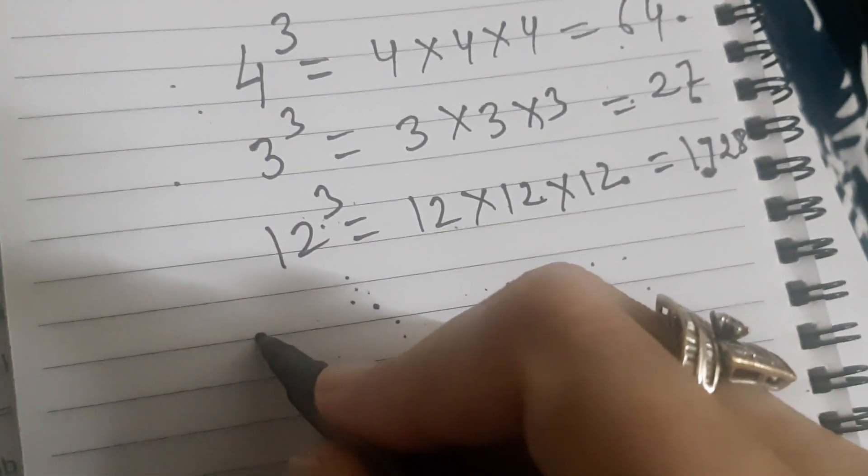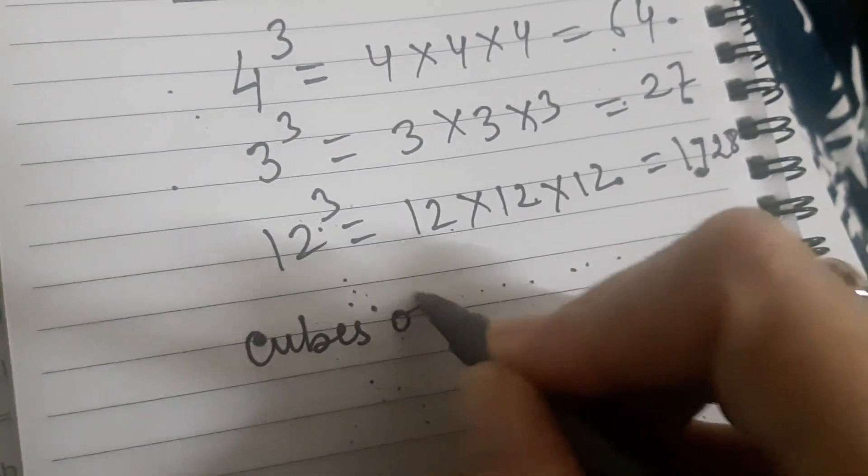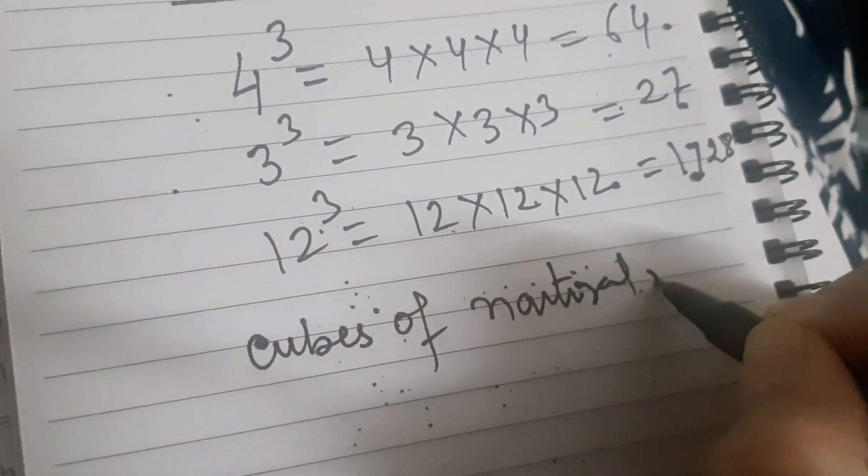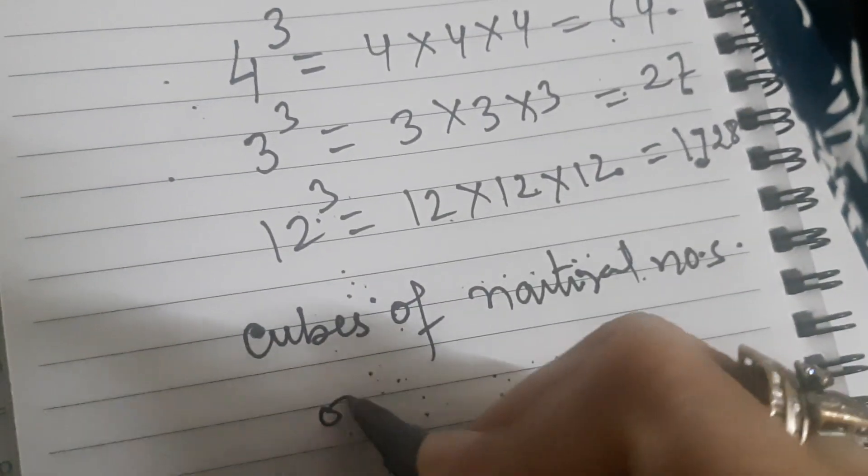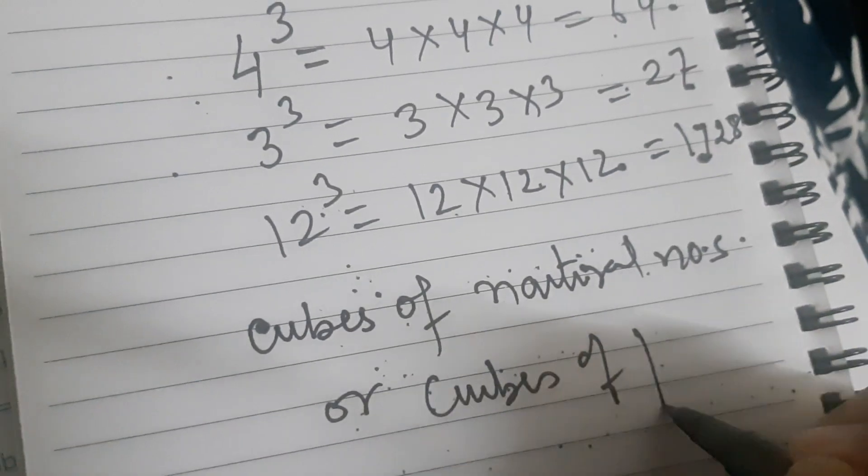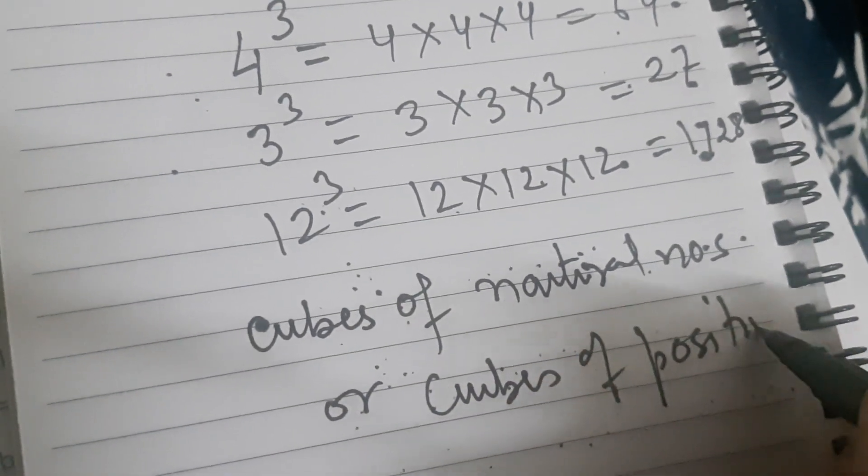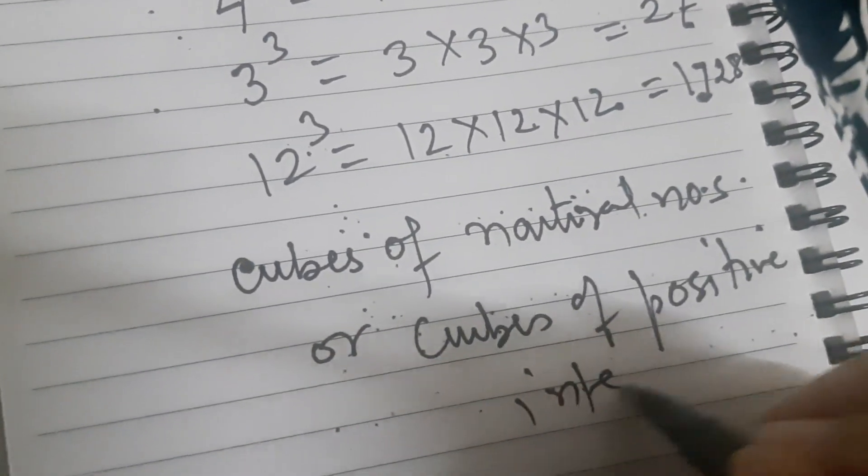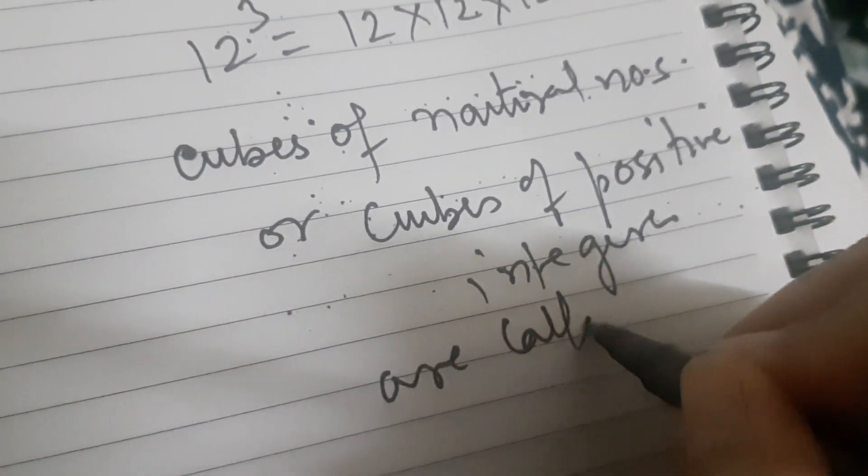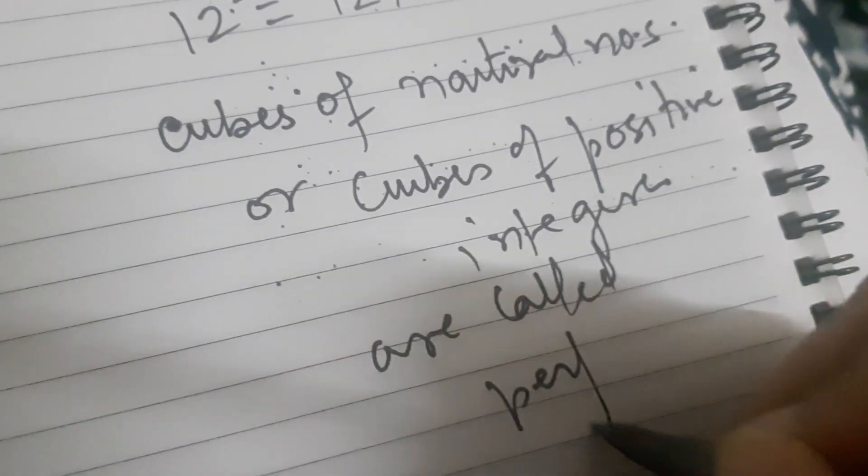So how do we define perfect cubes? Cubes of natural numbers, or we call them cubes of positive integers, are called perfect cubes.